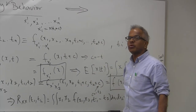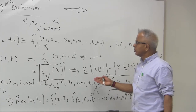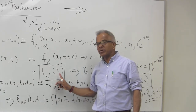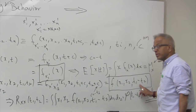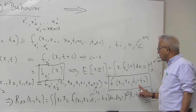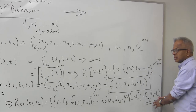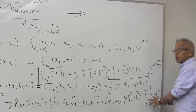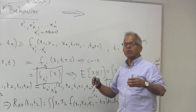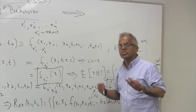Sometimes it is very difficult to figure out whether the process is strict sense stationary or not — how will you find out the density function when generally you have a set of measurements? It may be very difficult to verify the density function conditions. But if the process is strict sense stationary, you get two freebies: the mean is a constant, and the autocorrelation is a function of only t1 minus t2. So we can relax our definition of stationarity and come up with a new notion — wide sense stationary processes.